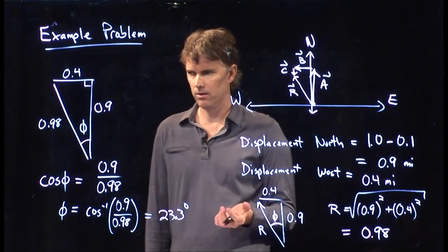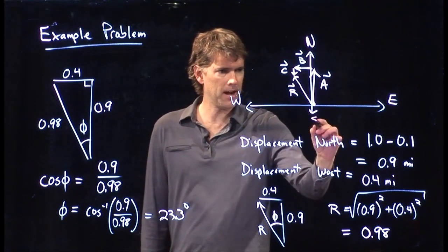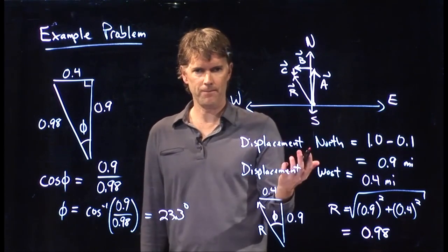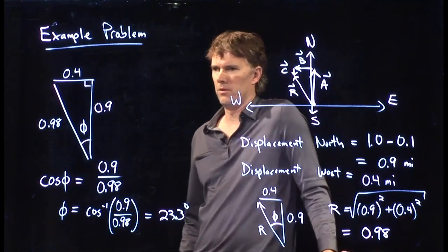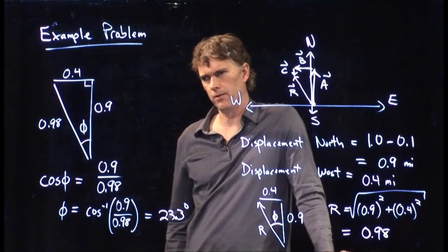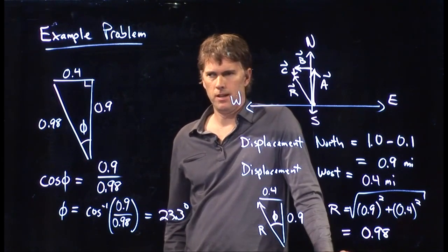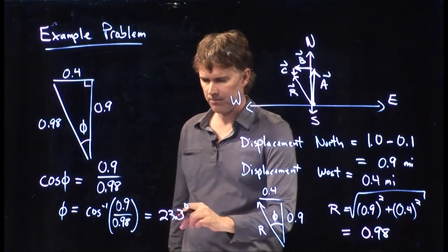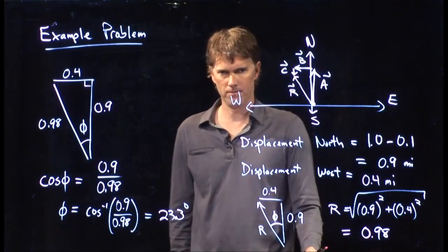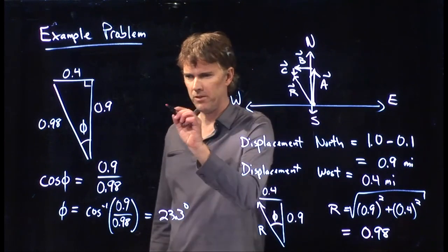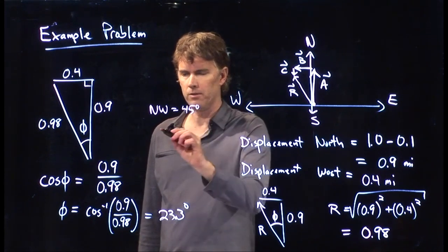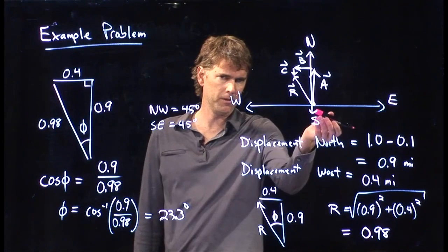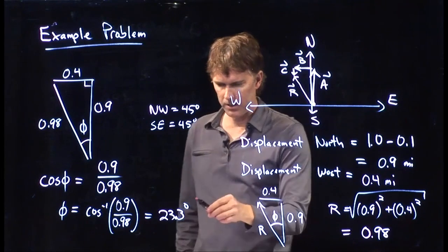23.3 degrees is a valid angle, but whenever you're dealing with north, east, south, and west, you need to specify with respect to what. Is it north? Is it west? It's in that quadrant — northwest? Typically when we say northwest we always mean 45 degrees — halfway between north and west. So we're in the northwest quadrant, but we need to be more specific.